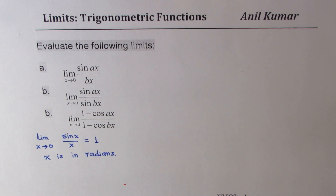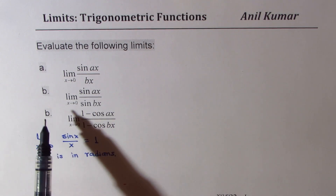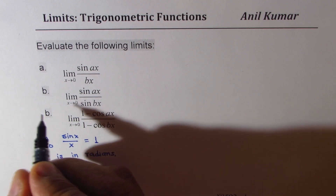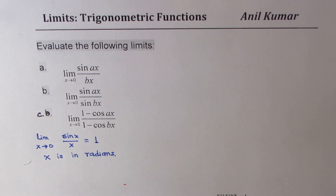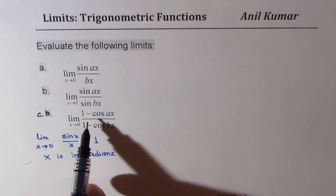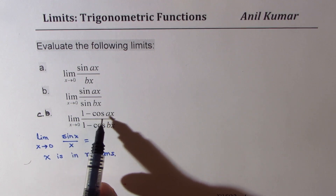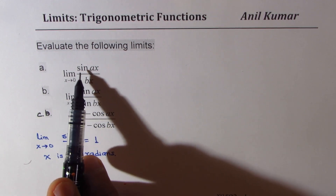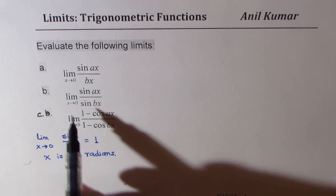One more thing which is very important to understand is a formula which will be applied in part c. The formula basically converts the expression 1 minus cos ax into the form of sine ax.